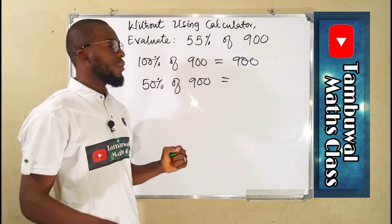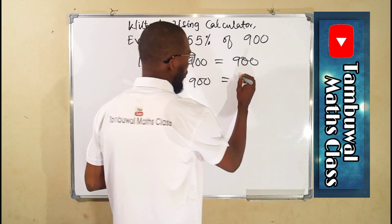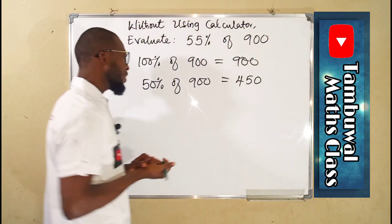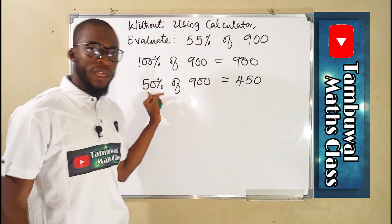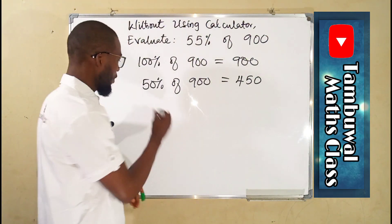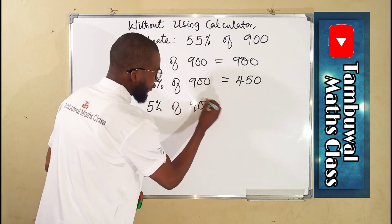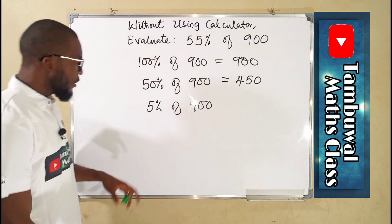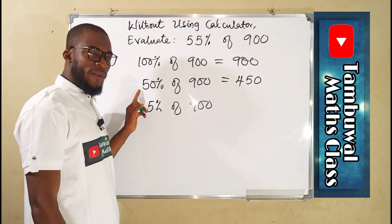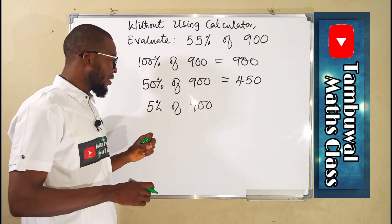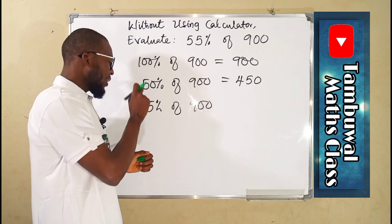From here we can find 5% of 900. To get to 5% from 50%, we have to split 50% into 10 pieces. So by dividing 50% by 10, we'll be able to get 5%.